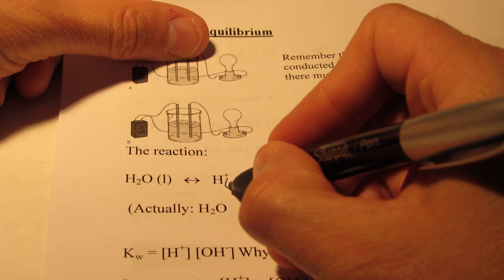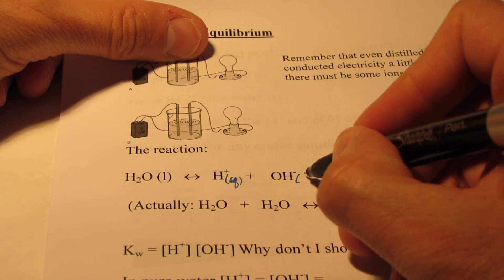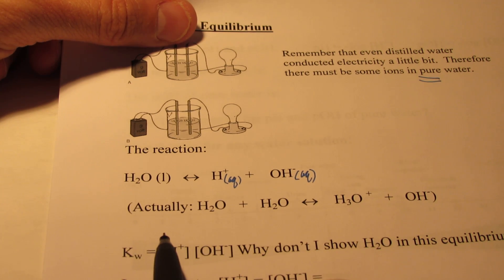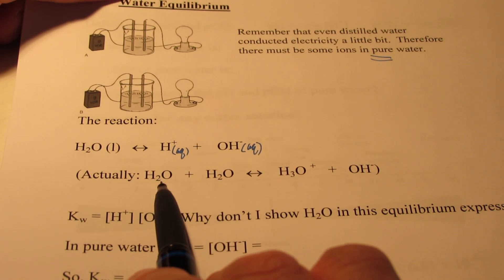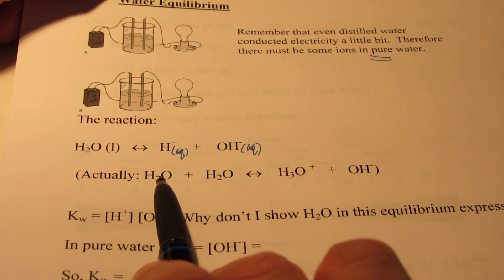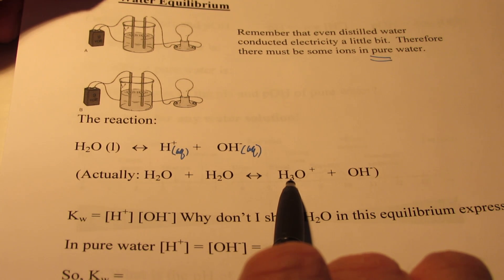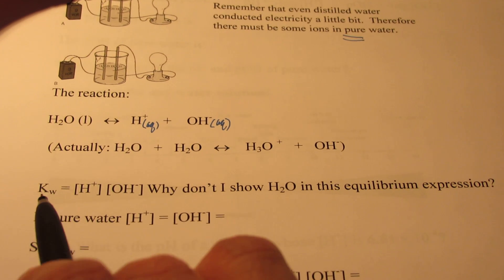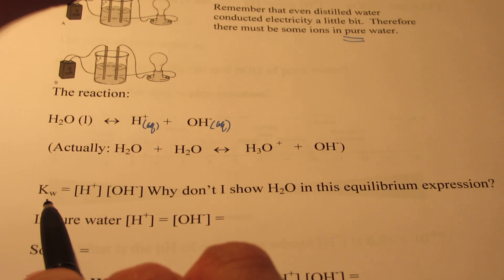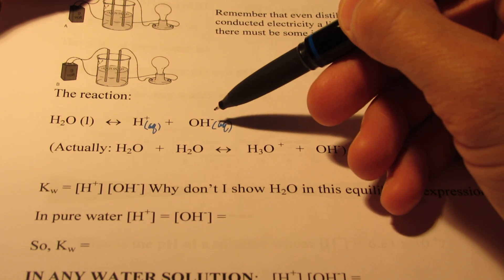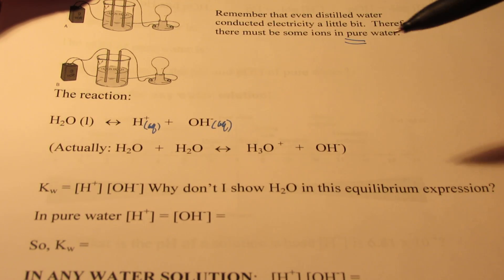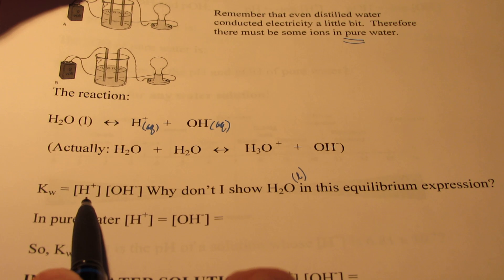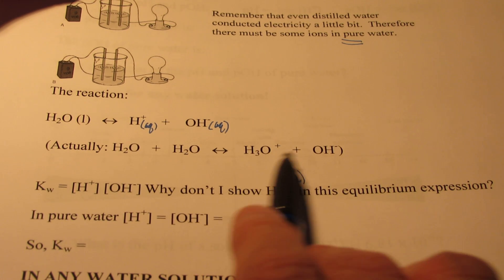It turns out that water dissociates a little bit into H⁺ ions and hydroxide ions. You see the arrow going both ways, meaning it reaches an equilibrium. In the abbreviated form, one water molecule takes the proton from another water molecule, forming the H₃O⁺ or hydronium ion, leaving a hydroxide. The equilibrium expression for this reaction would be H⁺ times OH⁻. Liquid water is left out because we don't include liquids in our equilibrium expression, so we write it as H⁺ times OH⁻, or H₃O⁺ times OH⁻.